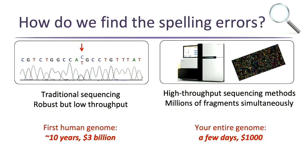To give you a sense of the order of magnitude: this original technology was used to sequence the first human genome back in the 90s. It took about 10 years and cost about $3 billion. Today, using next-generation sequencing, you could sequence every genome in this room in a few days for about $1,000 each. This has changed our field and allowed us to identify genetic changes in large numbers of individuals to understand normal variation and identify disease changes.